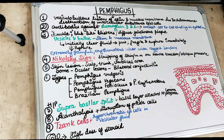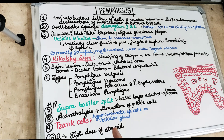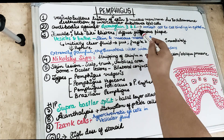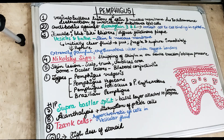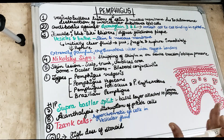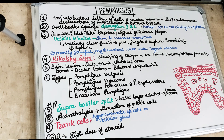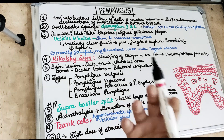The body's own autoimmune reaction causes a split between the cells. These autoantibodies are produced against desmosome 3 and desmosome 1. Because of this, cell-to-cell binding is lost in the epithelium, and bullae or vesicles develop in the epithelium of the skin and mucous membrane, forming these oral lesions.